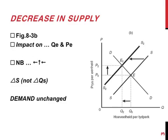If there is a decrease in supply, that means that the supply curve moves towards the left. There is an increase in the equilibrium price and a decrease in the equilibrium quantity when the demand curve remains unchanged. It's important to note that we refer to this as a change in supply. There is a decrease in the quantity supplied at every price, so the whole curve moves.